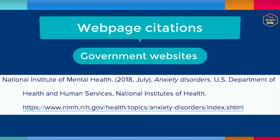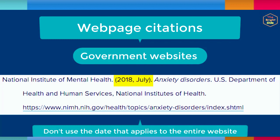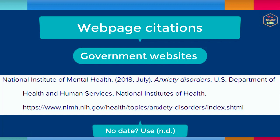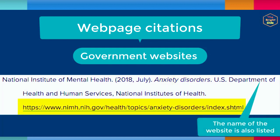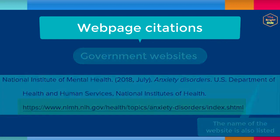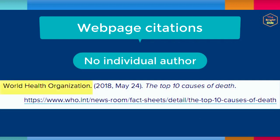Other webpages you might cite include government websites. If there is no individual author, use the agency responsible for the webpage as the author. Provide a date for the webpage if possible — look for a date that pertains to the specific content you are citing rather than the website as a whole. If there is no date listed, use the abbreviation "n.d." for no date. Then italicize the title of the webpage and end the reference with the URL. Follow a similar format when citing a non-government website where the organization is the author. In this case, you don't need to include the site name after the title of the webpage in order to avoid repetition.